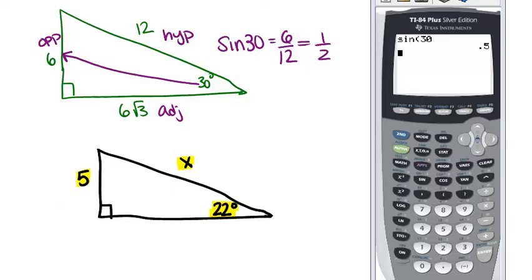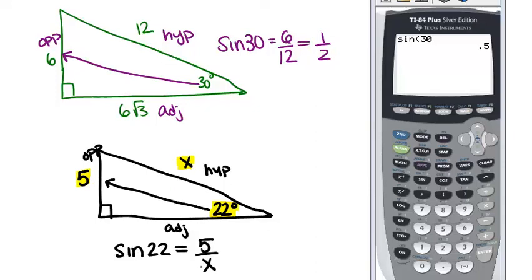These two sides that are given, from the 22 degree angle, 5 is the opposite side, and x is the hypotenuse. The unmarked side would be the adjacent side. So the 5 and the x are opposite and hypotenuse, so that's dealing with sine. So what we know is that the sine of 22 degrees must equal 5 over x, because sine is always opposite over hypotenuse.